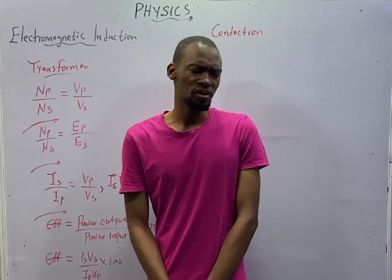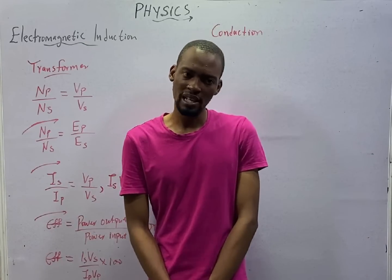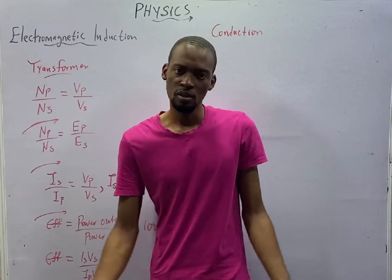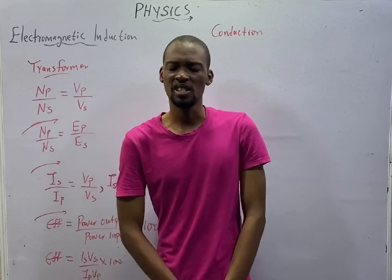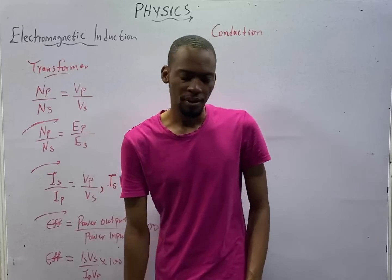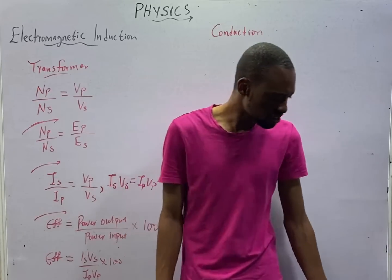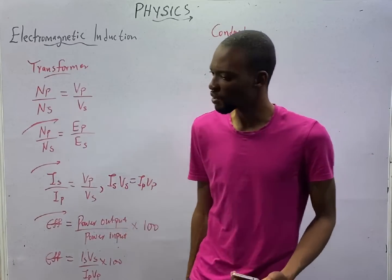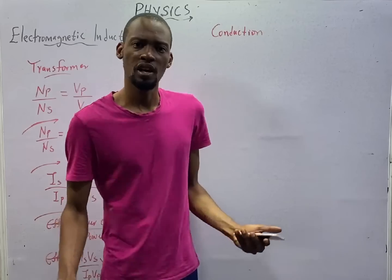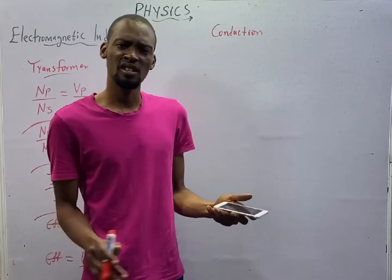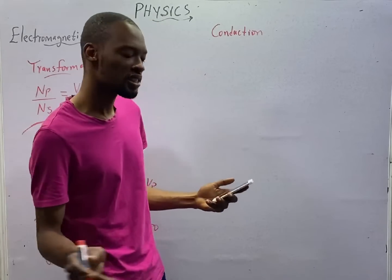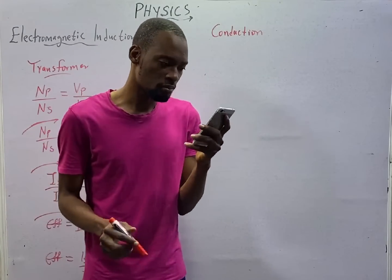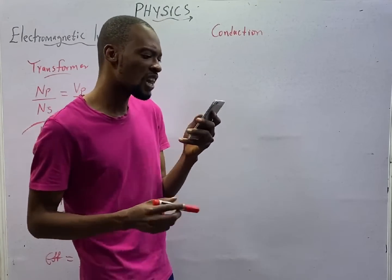Efficiency is always less than 100% because the power output will be less than power input all the time. Why is power output lesser than power input? Because losses occur. Even in machines, efficiency is not 100% because of friction and other losses that occur in the system.